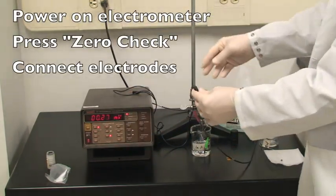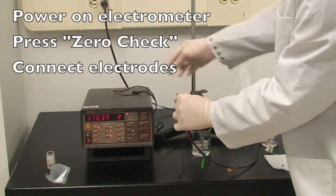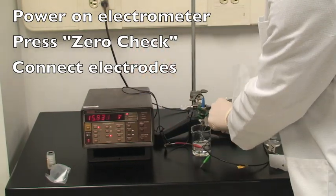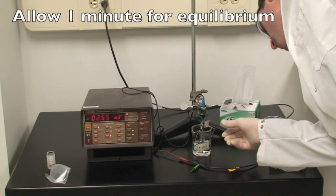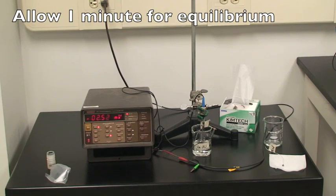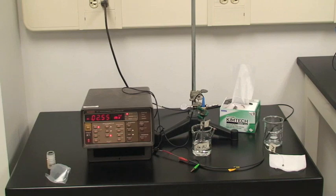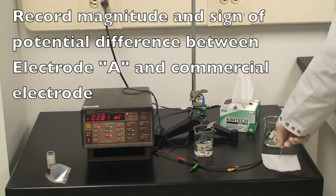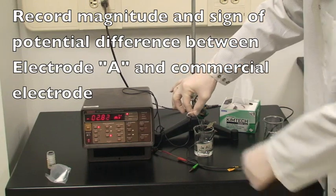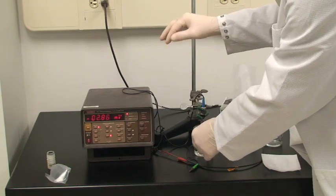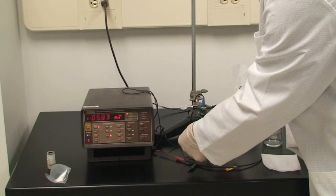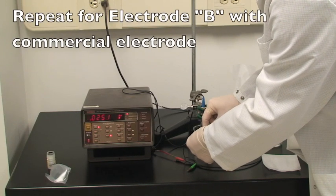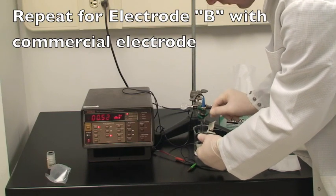Turn on the electrometer by pressing the power button and then the zero check button. Connect one lead from the electrometer to your electrode and the second lead to the reference electrode, and be sure to use the same conventions for positive and negative throughout the experiment. Allow approximately one minute for the electric potential to reach a steady value. Record both the magnitude and sign of the electric potential generated between electrode A and the one molar reference electrode. A potential of less than three millivolts should yield an experimental error of less than 10%. Repeat this process and record the potential from electrode B with the one molar reference electrode.